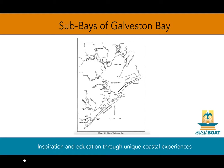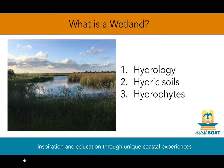It has four larger bays: Galveston, Trinity, East and West, and then a lot of smaller bays — Clear Lake, Dickinson, Chocolate, Moses Lake. These are just a few.